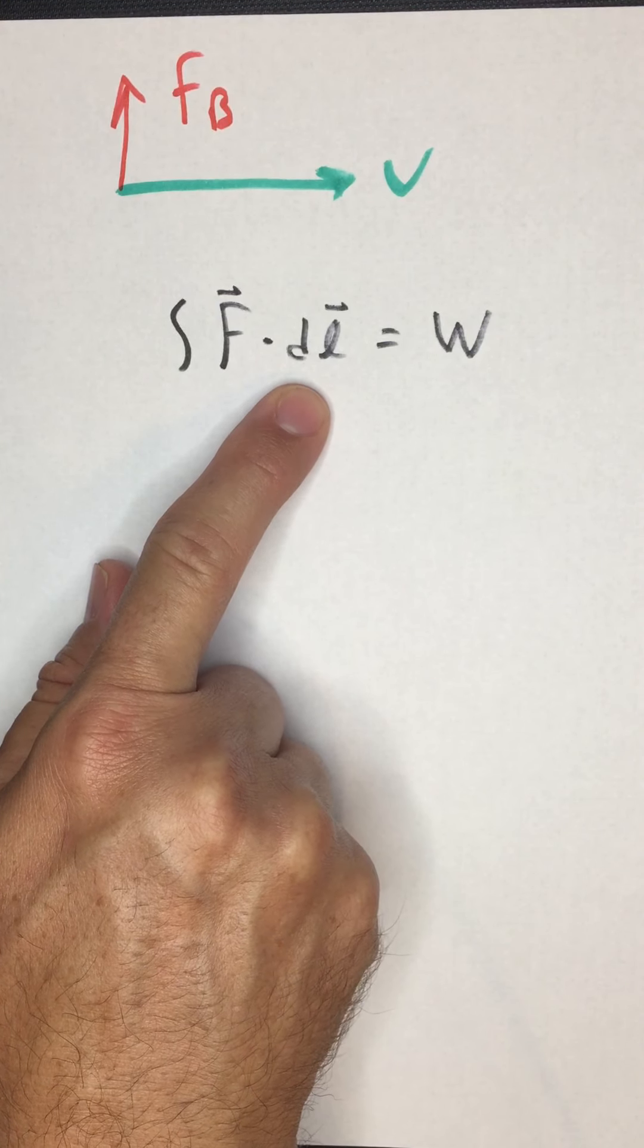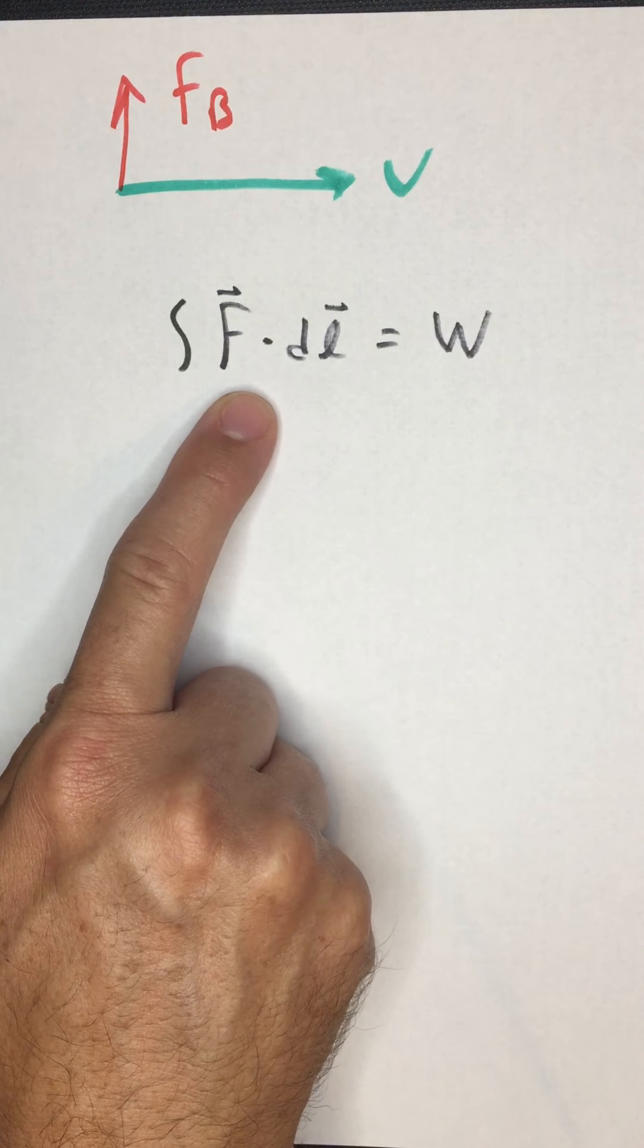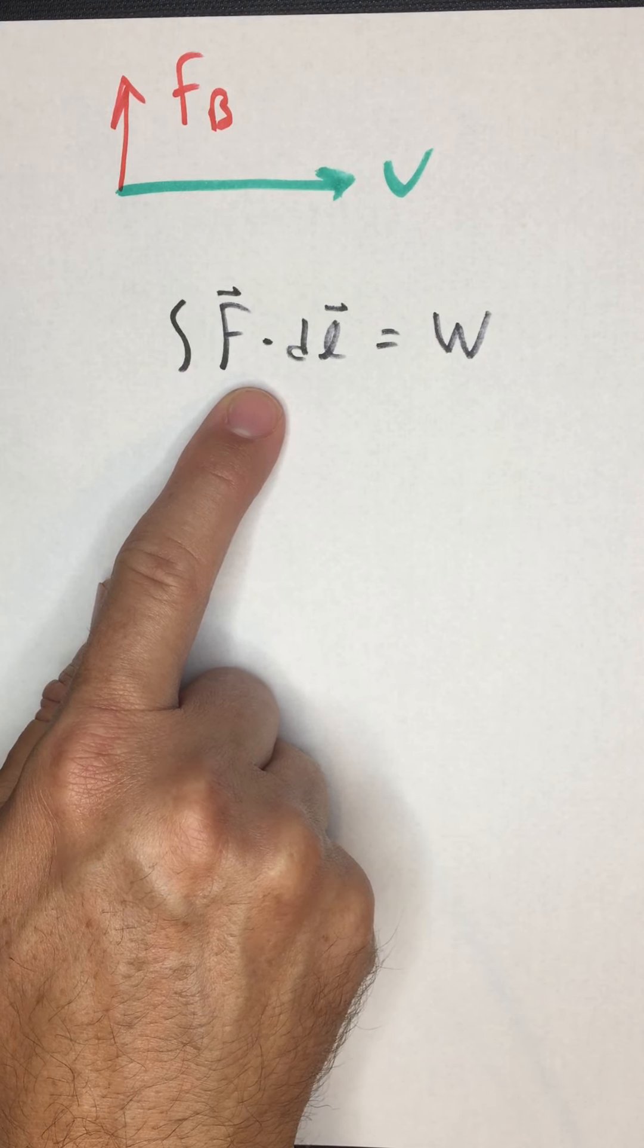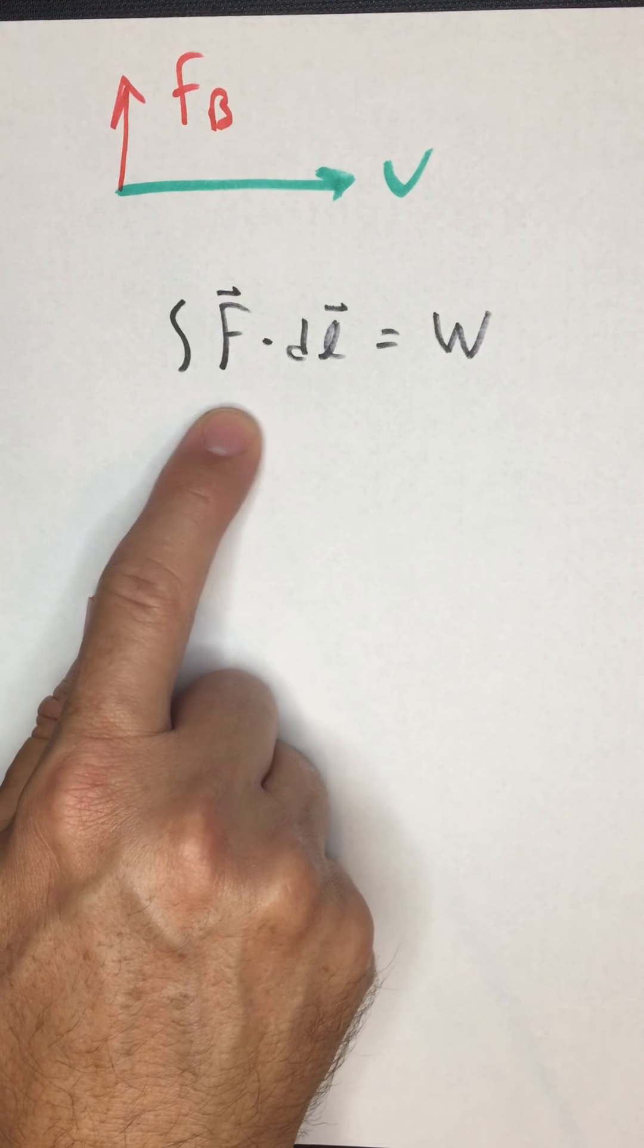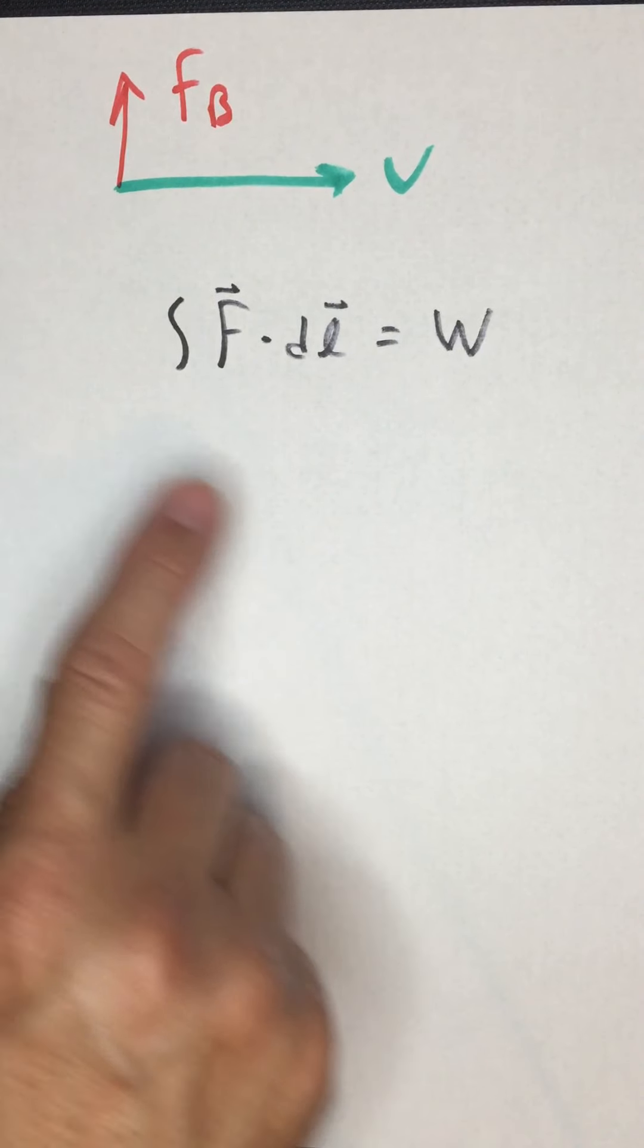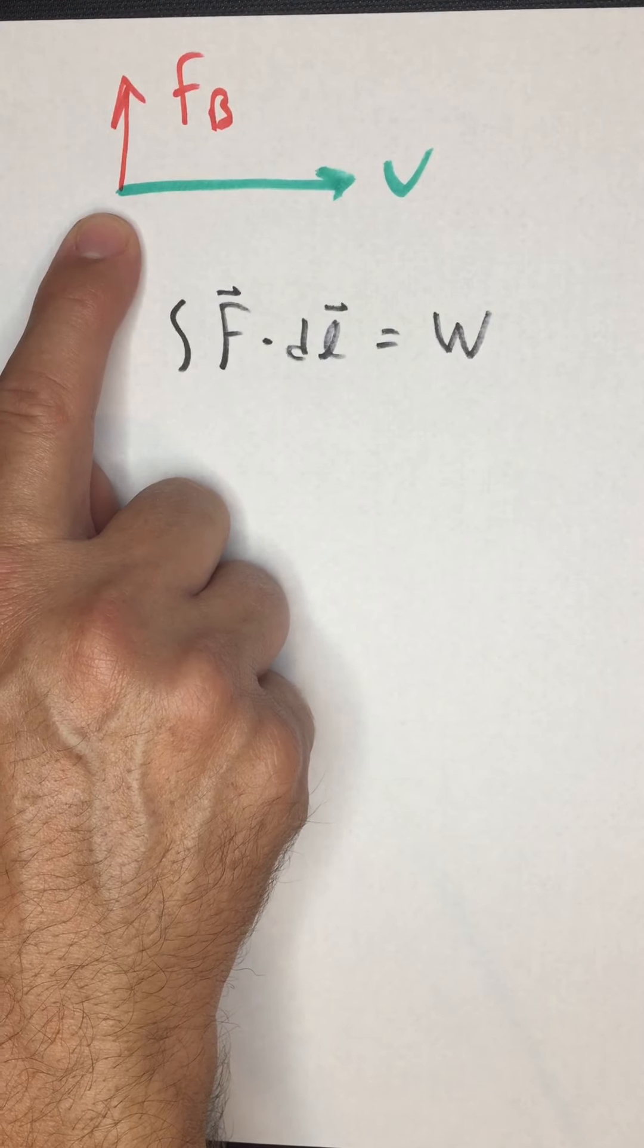where DL is the path over which you are integrating this force. The dot product, though, recall, picks out any parallel components. Dot product of orthogonal vectors is exactly zero. So in this case,